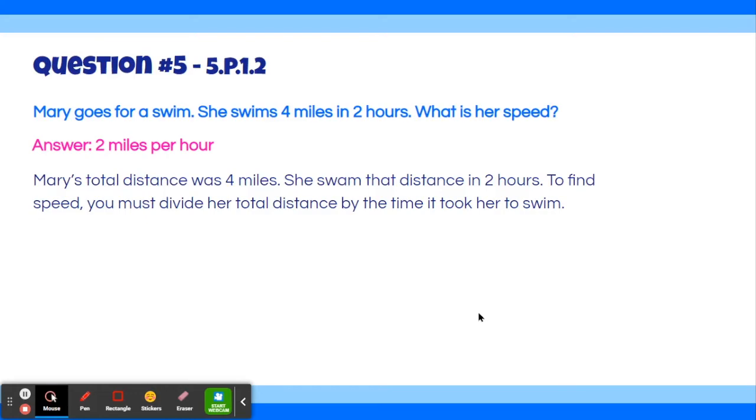Mary's total distance was 4 miles. She swam that distance in 2 hours. To find her speed, you need to divide her total distance by the time it took her to swim. Alright, so let's do that. So Mary's total distance was 4 miles. And if she ran that distance in 2 hours, we want to divide by 2 to figure out how far she traveled in 1 hour. So we'll divide 4 by 2, which equals 2. So Mary swam 2 miles per hour to reach the total distance of 4 miles in 2 hours.